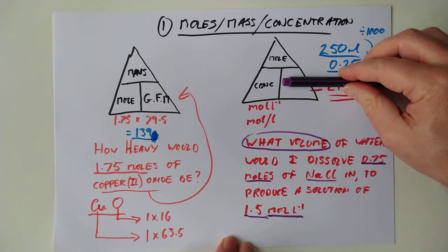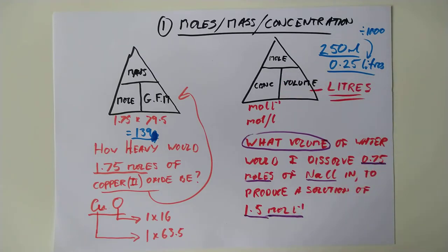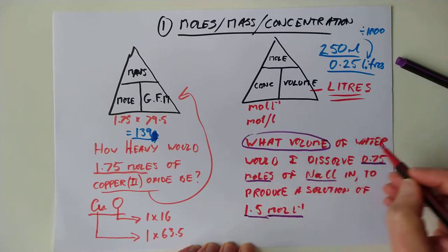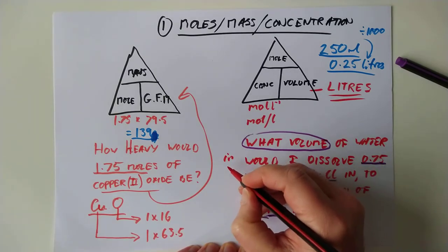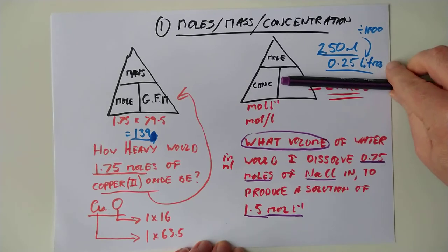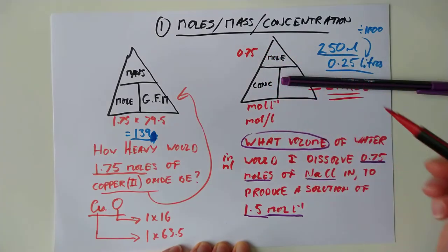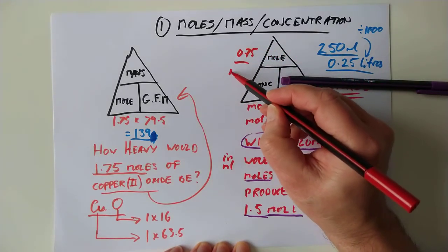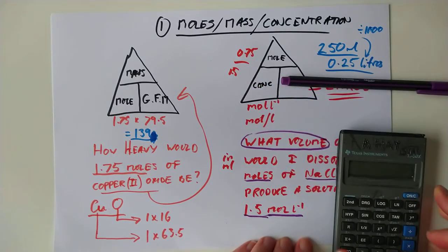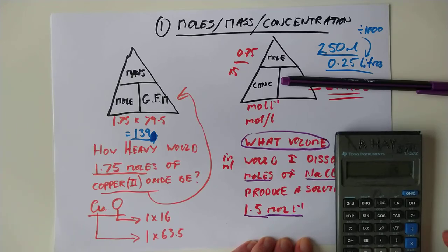In this case, the unknown quantity is volume, and we know moles. It's 0.75, and we know the concentration is 1.5. So this is actually straightforward. The question would say, what volume of water in millilitres would I dissolve 0.5 moles? Let's go back to the calculation. We've got 0.75 on the top line, and we've got 1.5 on the bottom line. So 0.75 over 1.5 gives us 0.5.